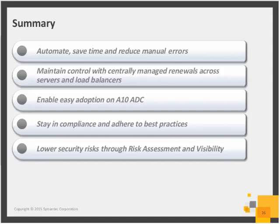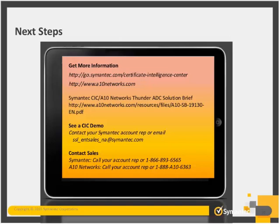For next steps, you can get more information on the CIC at the Symantec link, and we also provide the A10 link as well. The Symantec CIC and A10 network brief is available at the A10 Networks site as well. If you are looking to see a CIC demo, you can contact your sales rep directly, your account manager, or use the SSL enterprise sales alias. You can call Symantec Sales at the 866 number, and A10 Networks sales at the 888 number.